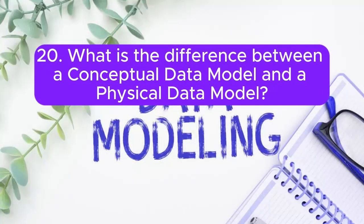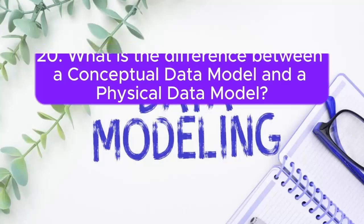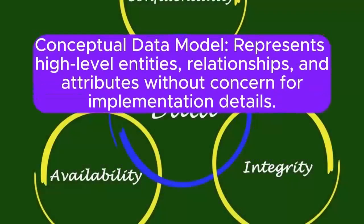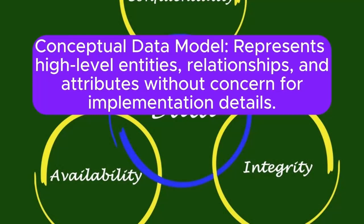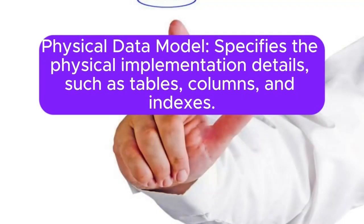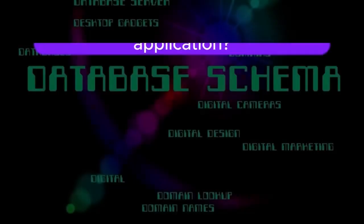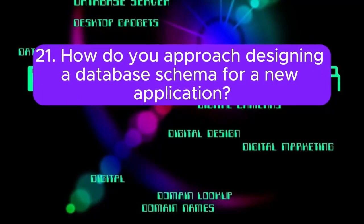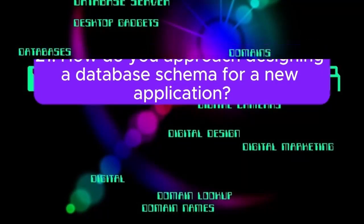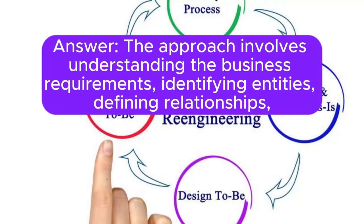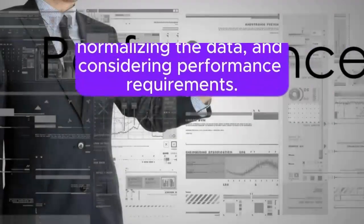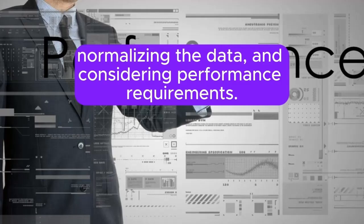20. What is the difference between a conceptual data model and a physical data model? Answer: A conceptual data model represents high-level entities, relationships, and attributes without concern for implementation details. A physical data model specifies the physical implementation details, such as tables, columns, and indexes. 21. How do you approach designing a database schema for a new application? Answer: The approach involves understanding the business requirements, identifying entities, defining relationships, normalizing the data, and considering performance requirements.